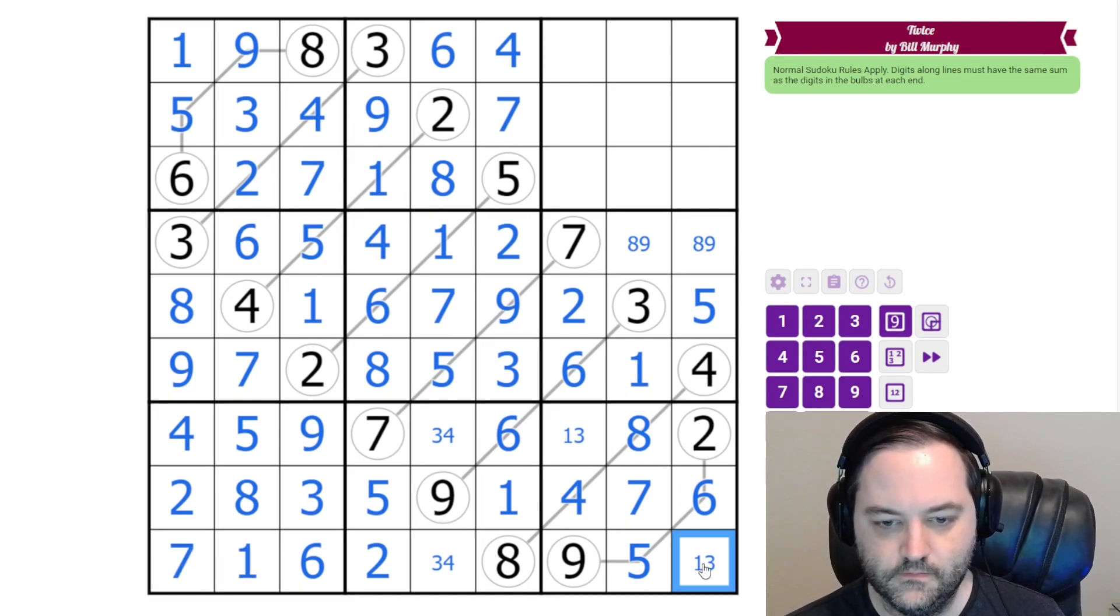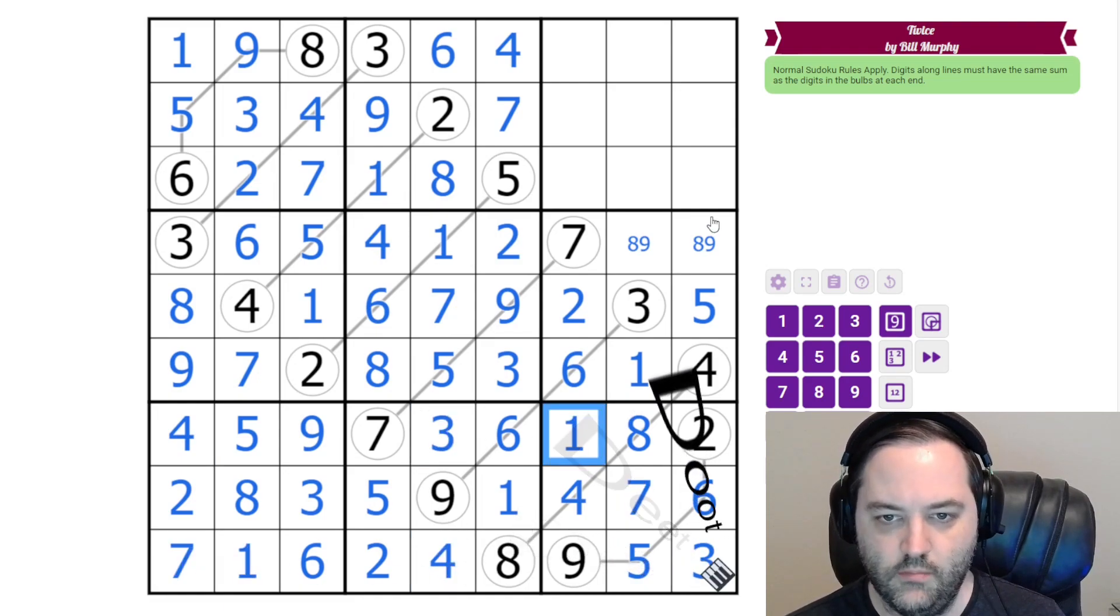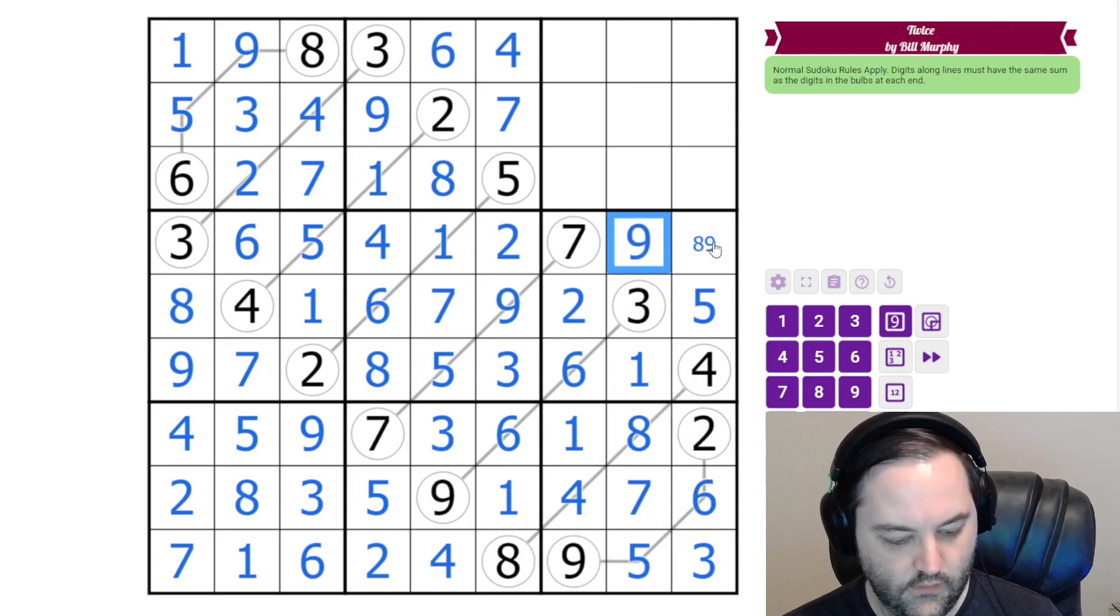Four, seven, one, three, four, three, one. The eight here gives us nine and eight. And now we're down to the last box.